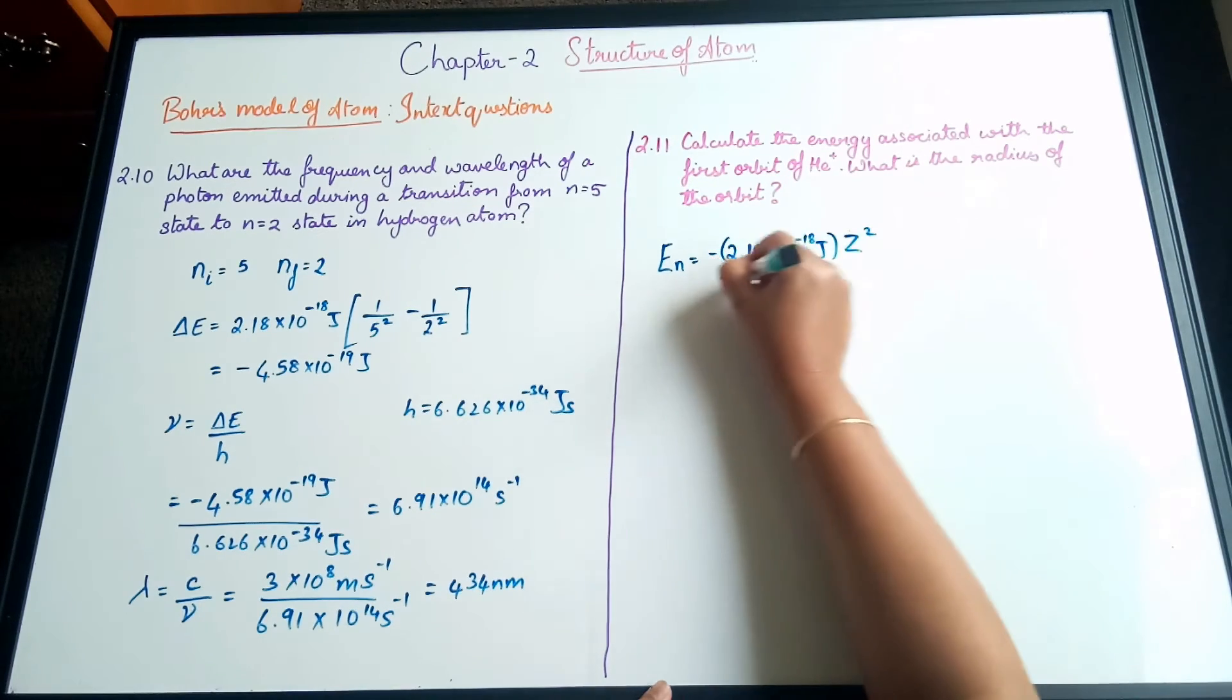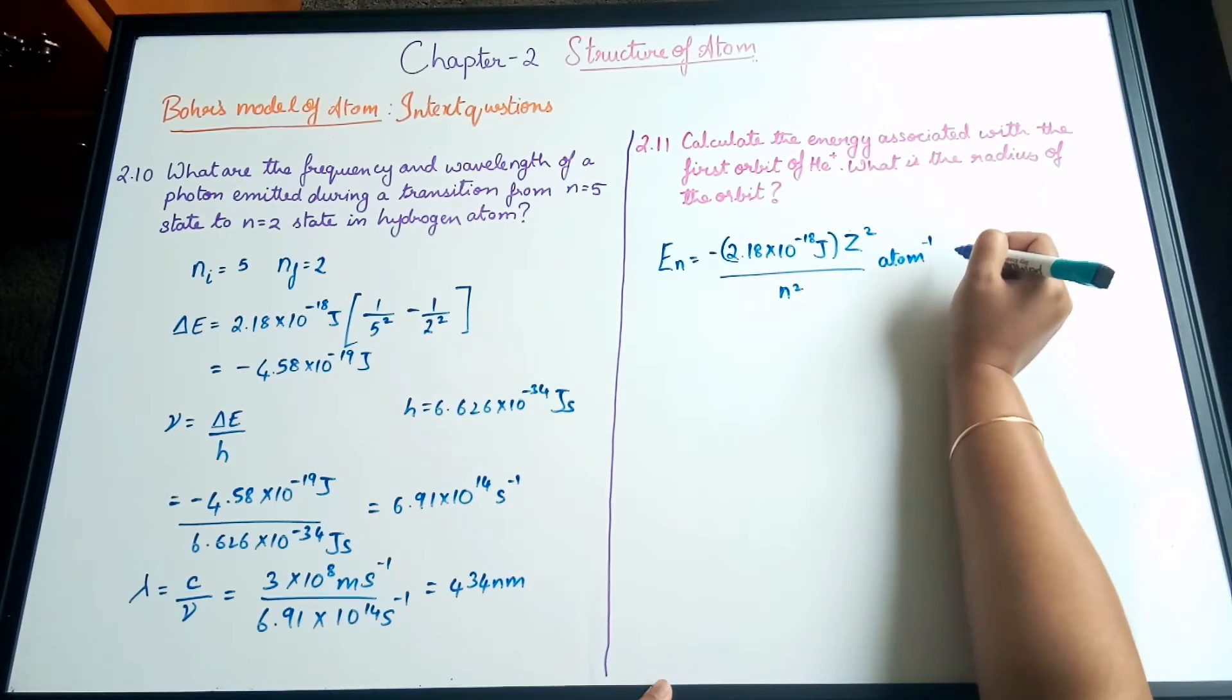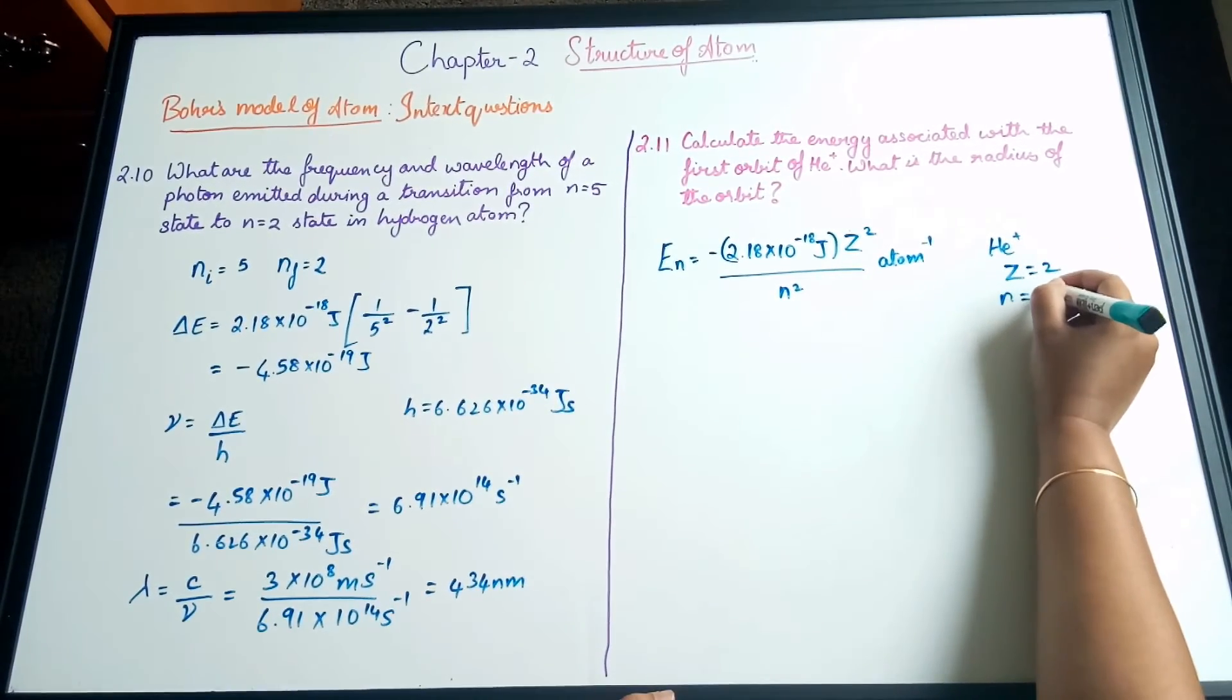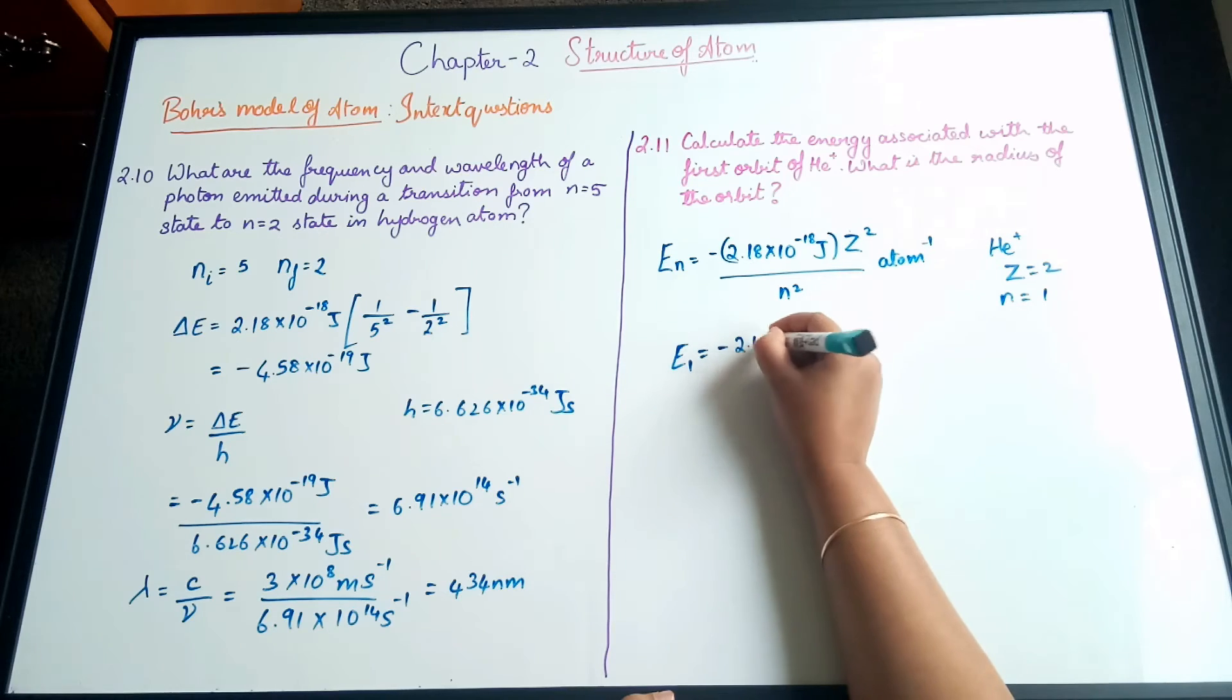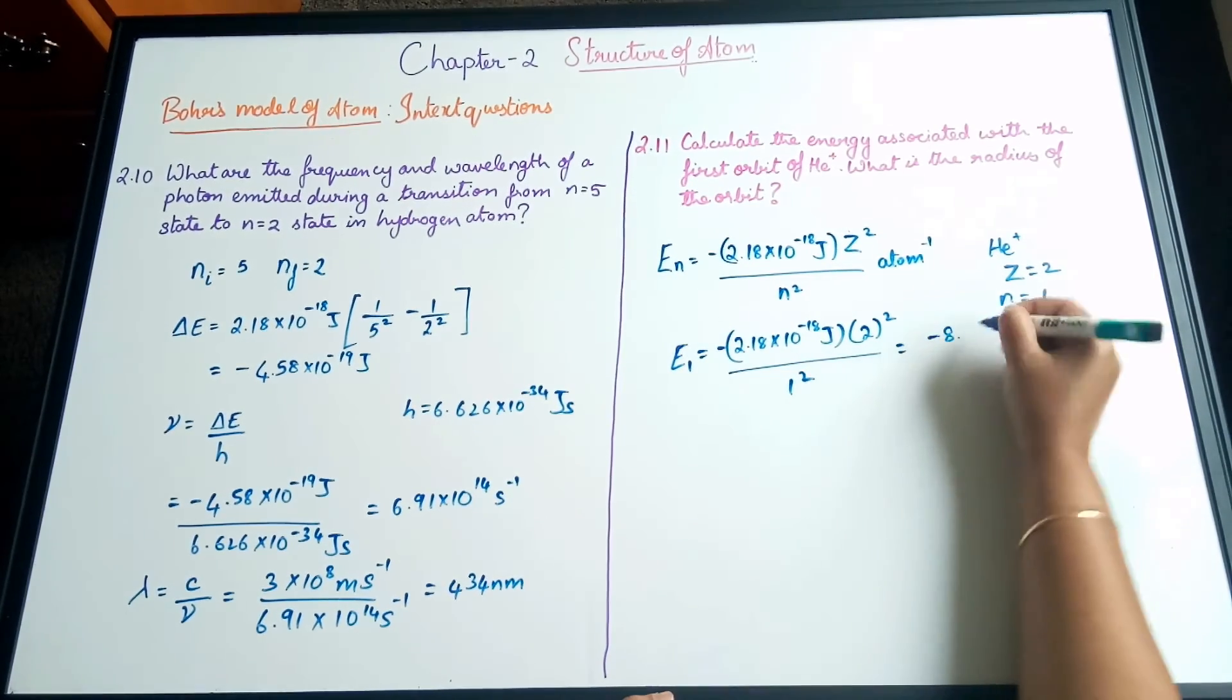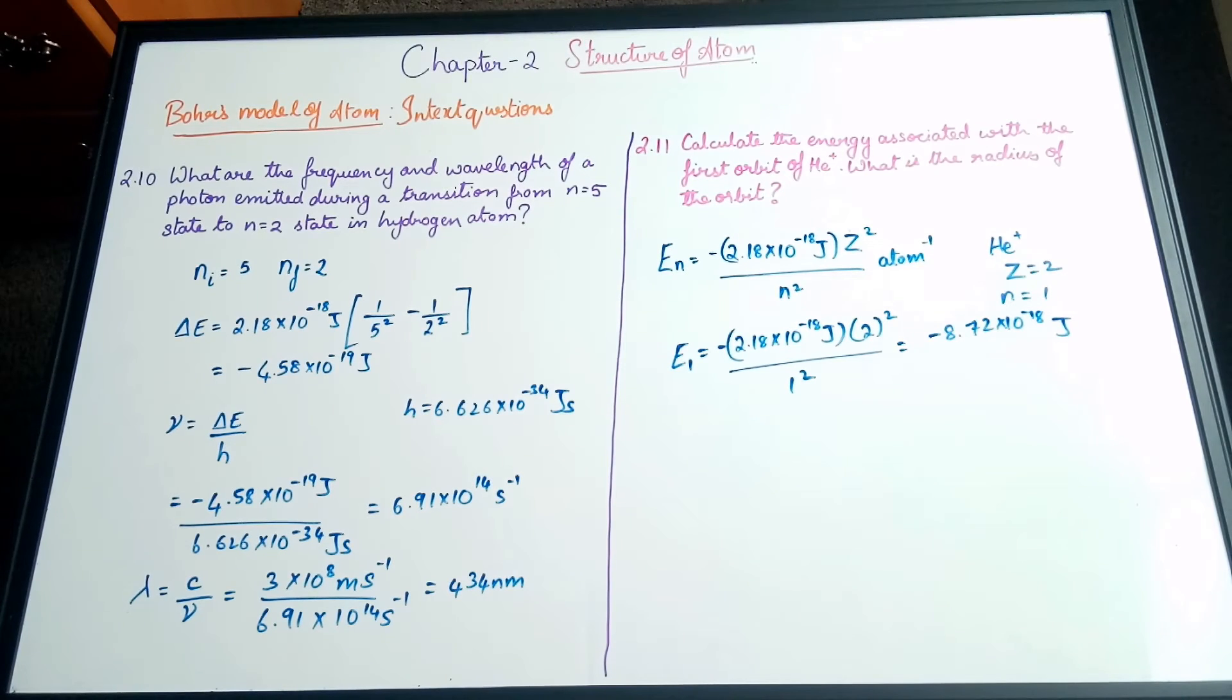The equation is Eₙ = -2.18×10⁻¹⁸ joules (Rydberg's constant) × Z²/n². For helium, He⁺ has atomic number Z=2 and n=1 for the first orbit. So E₁ = -2.18×10⁻¹⁸ joules × 2²/1². When simplified we get -8.72×10⁻¹⁸ joules. We substituted the values from the helium ion into the equation.